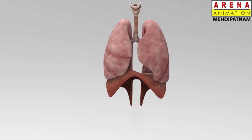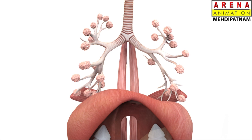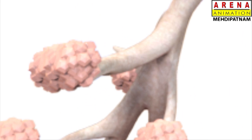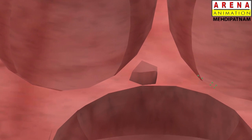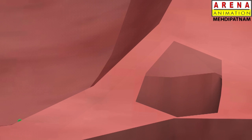The right lung is smaller in size than the left lung. Alveoli are the primary units of the respiratory system. From the alveolus, gas exchange takes place between the alveoli and the blood capillaries. Through the diffusion process, blood collects oxygen from the alveoli, and the alveoli collect carbon dioxide from the blood.